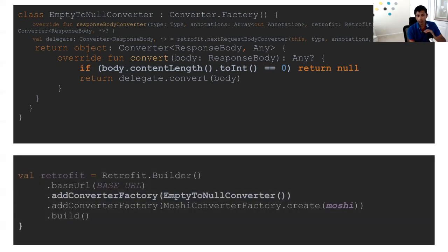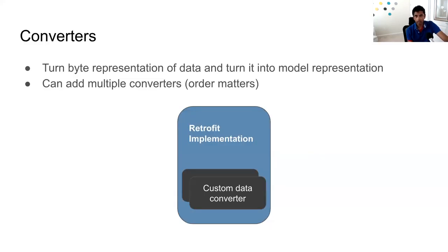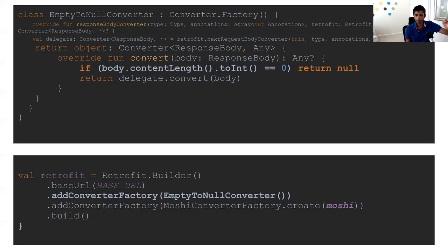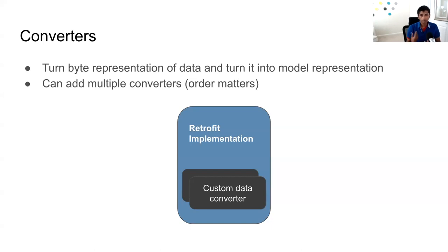You can also chain multiple converter factories. For example, you can create an `EmptyToNullConverter` that extends `Converter.Factory` and overrides `responseBodyConverter` — checking if the response body length is zero (which is a malformed response some Ruby servers return) and returning null early, then delegating to the Moshi converter otherwise. The order matters: add `EmptyToNullConverter` first, then `MoshiConverterFactory`, so the null check runs before Moshi attempts to parse.